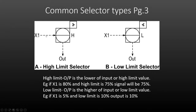For example, if X1 is 80% but we have a high limit set at 75%, our output will be clamped at 75%. Image B shows the inverse — a low limit selector. The output is the higher of the input or the low limit value. So if X1 is 5% and the low limit is 10%, the output is going to be 10%. Both of these have very defined operations.